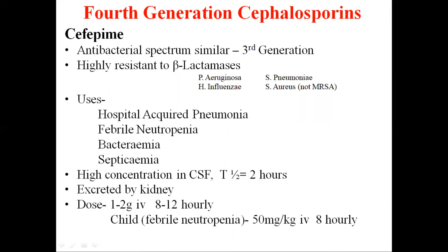Due to their extended spectrum action, 4th generation cephalosporins are very effective in serious infections like hospital-acquired pneumonia and nosocomial infections. They are also effective against febrile neutropenia, bacteremia, and septicemia, and are used in serious skin infections, urinary tract infections, and infections in immunocompromised patients. High concentrations are achieved in the CSF, making them very useful in CNS infections. The drug has a half-life of 2 hours and is excreted by the kidney.